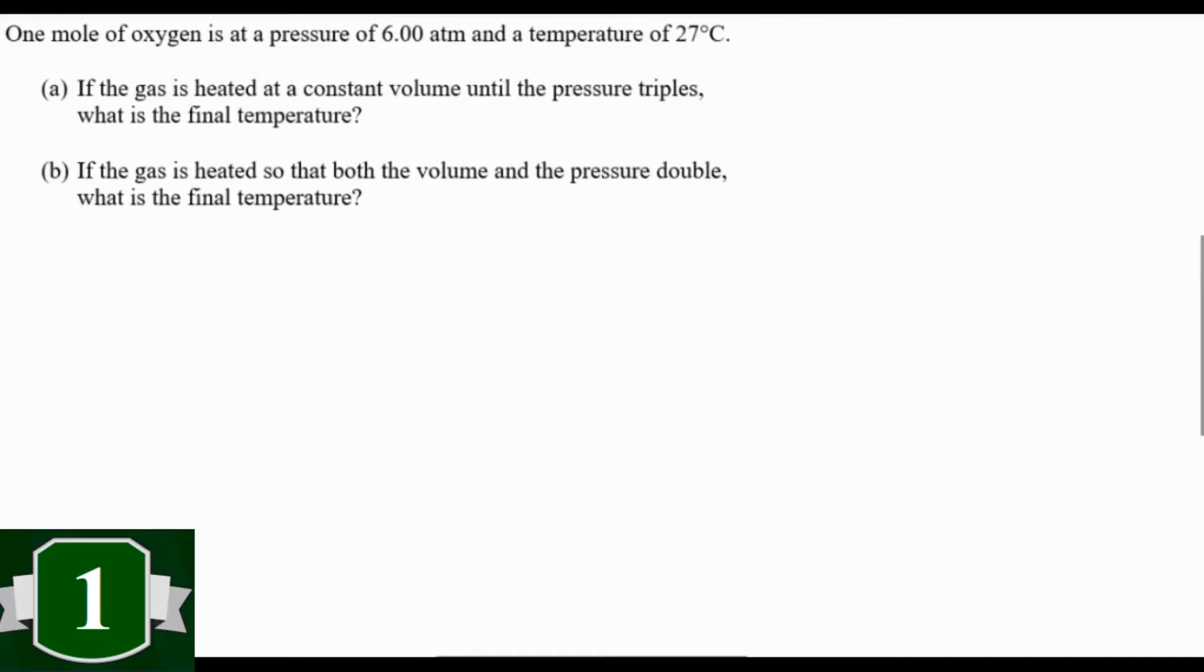Here we have one mole of oxygen at a pressure of six atmospheres and a temperature of 27 degrees Celsius. If we heat the gas at a constant volume until the pressure triples, what is the final temperature? And if we heat it so that both the volume and the pressure double, what is the final temperature? First things first, 27 degrees Celsius is 300 Kelvin. If you don't do that first, you're going to get this wrong.